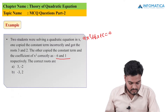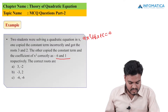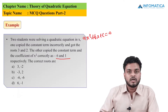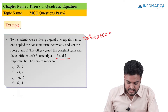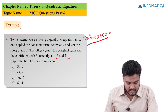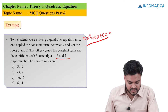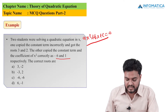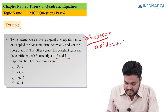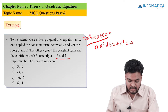In this question there are two students solving ax² + bx + c = 0. The first student copied the constant term incorrectly, so his equation becomes ax² + bx + c' = 0 with roots 3 and 2.